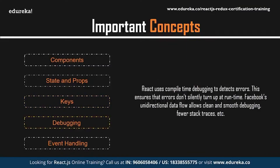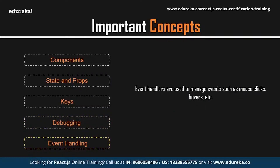Debugging in React: developers will inevitably hit roadblocks — from a missing bracket to segmentation faults. The earlier an exception is caught, the lower the cost overhead. React uses compile-time debugging to detect errors at an early stage, ensuring errors don't silently appear at runtime. Facebook's unidirectional data flow allows clean, smooth debugging with fewer stack traces, less clutter, and an organized Flux architecture for bigger applications. Event handling: when events like button clicks or mouse hovers occur, event handlers perform the appropriate actions.